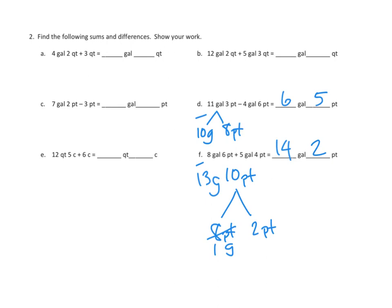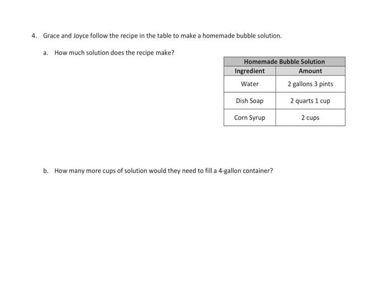Let's take a look at one more problem tonight. Problem number four. Grace and Joyce follow the recipe in the table to make a homemade bubble solution. We're going to read, draw, and write, and we're already reading. How much solution does the recipe make? Let's take a look at their homemade bubble solution. It has ingredients: water, dish soap, and corn syrup. That's pretty straightforward, and it has amounts. Two gallons, three pints, two quarts, one cup, and two cups. Wow. What a mess in terms of amounts. We have gallons, we have quarts, we have pints, and we have cups.